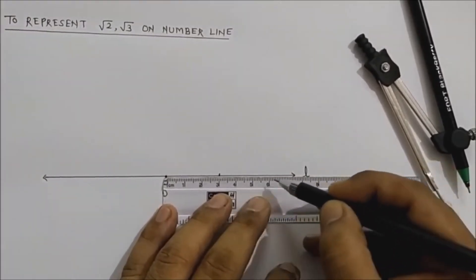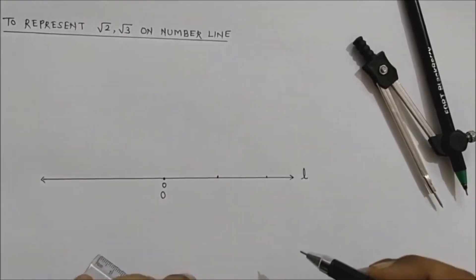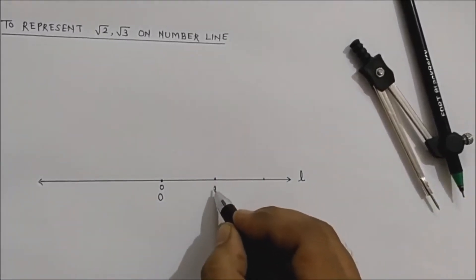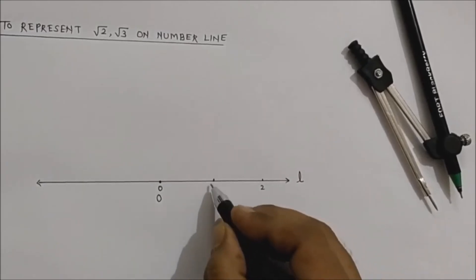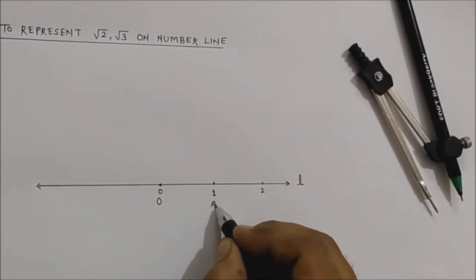This distance is 3 centimeters, and next 4, 5, 6 - this is also 3. So this distance is 3 centimeters, but we are writing it as 1 unit, and this is 2. Name this point as point A.